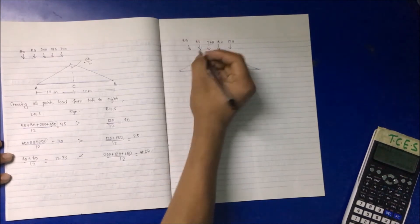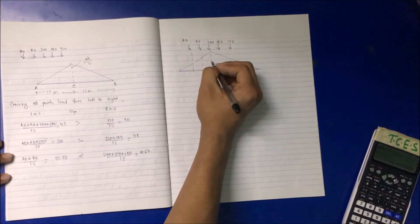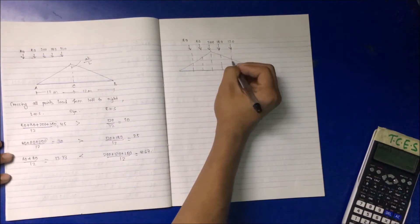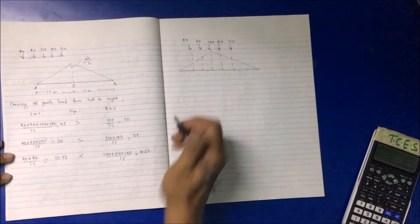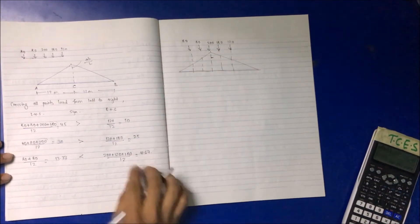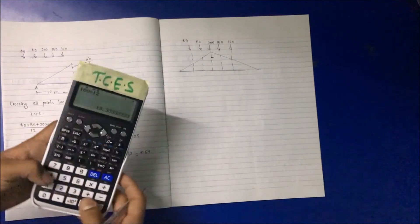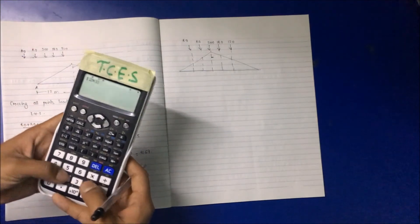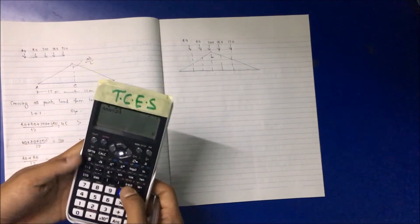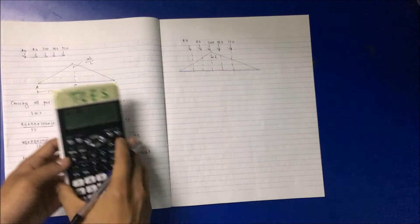This is the ILD for bending moment. The 200 kN should be acting at this point, with the remaining loads positioned according to their distances from the 200 kN load. The magnitude of the peak ordinate is obtained by AB/L, with A = 12 m, B = 12 m, and whole span = 24 m, giving a peak ordinate of 6.